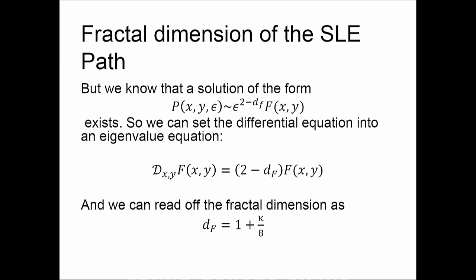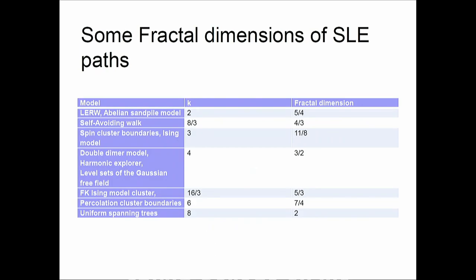From the beginning, I wanted the statistical mechanics of critical curves. These paths are my critical curves and I can now extract certain properties for them: the fractal dimension, passage to the left, winding angle, and so on. Here we have the fractal dimensions again, and you see that these numbers satisfy the relation kappa over 8.